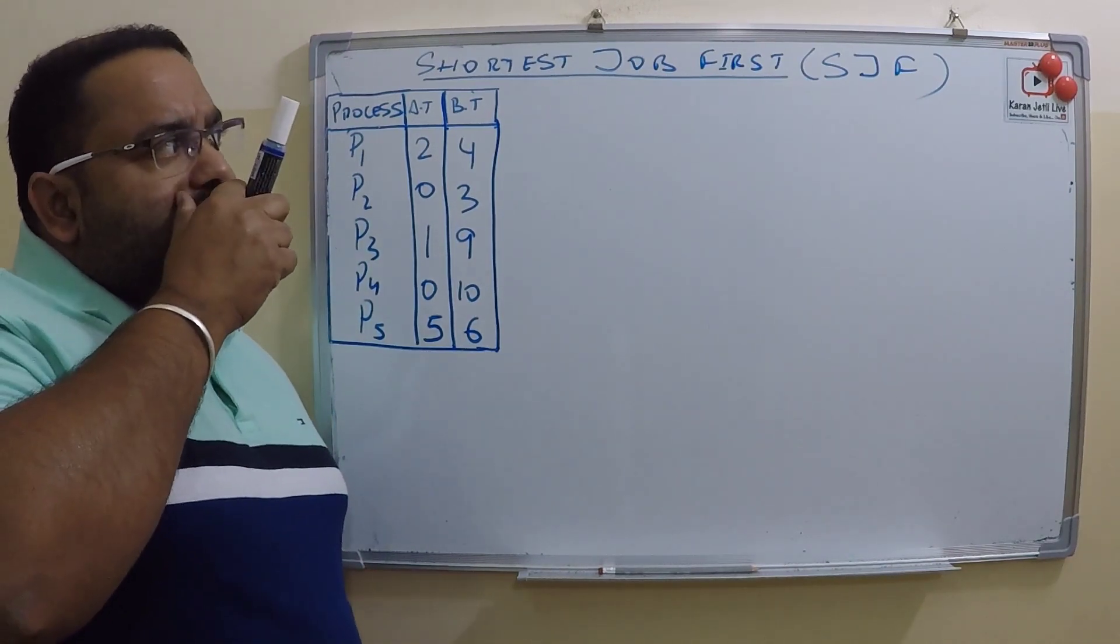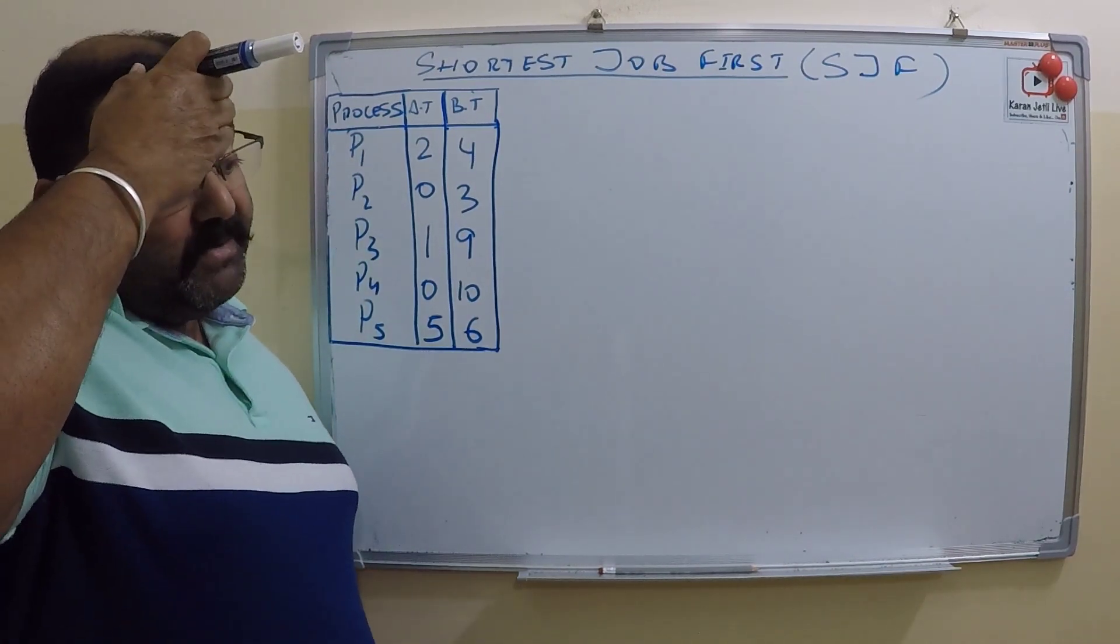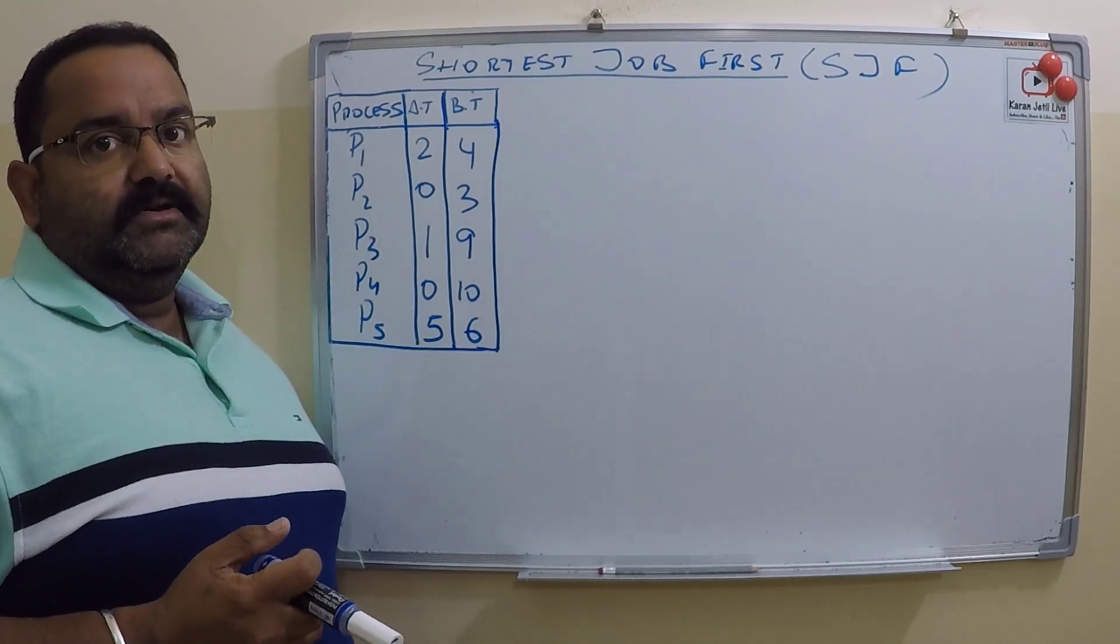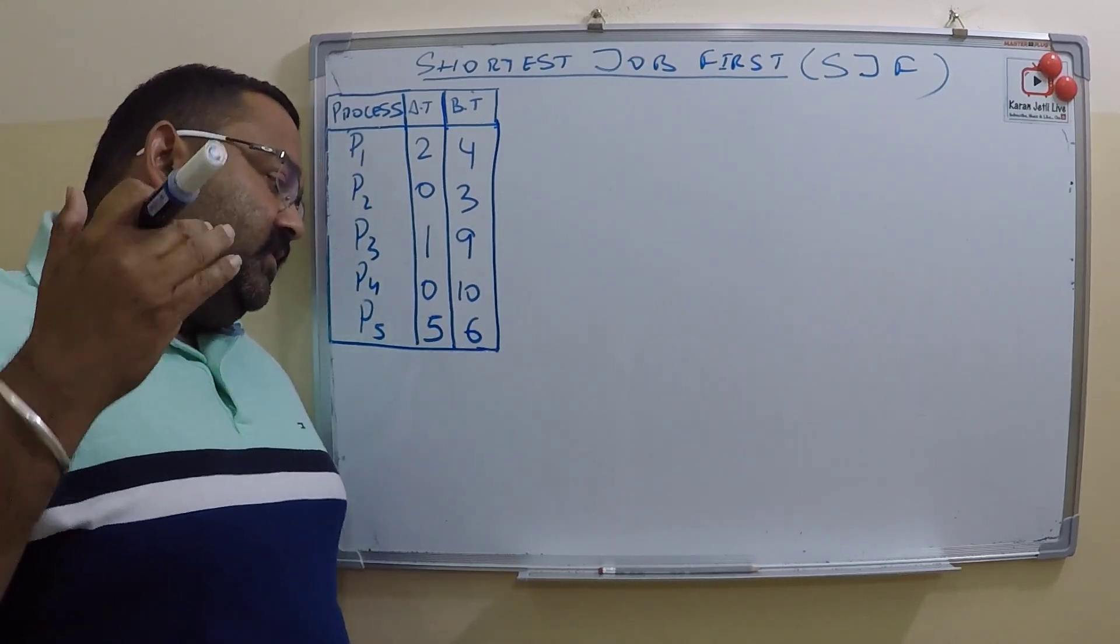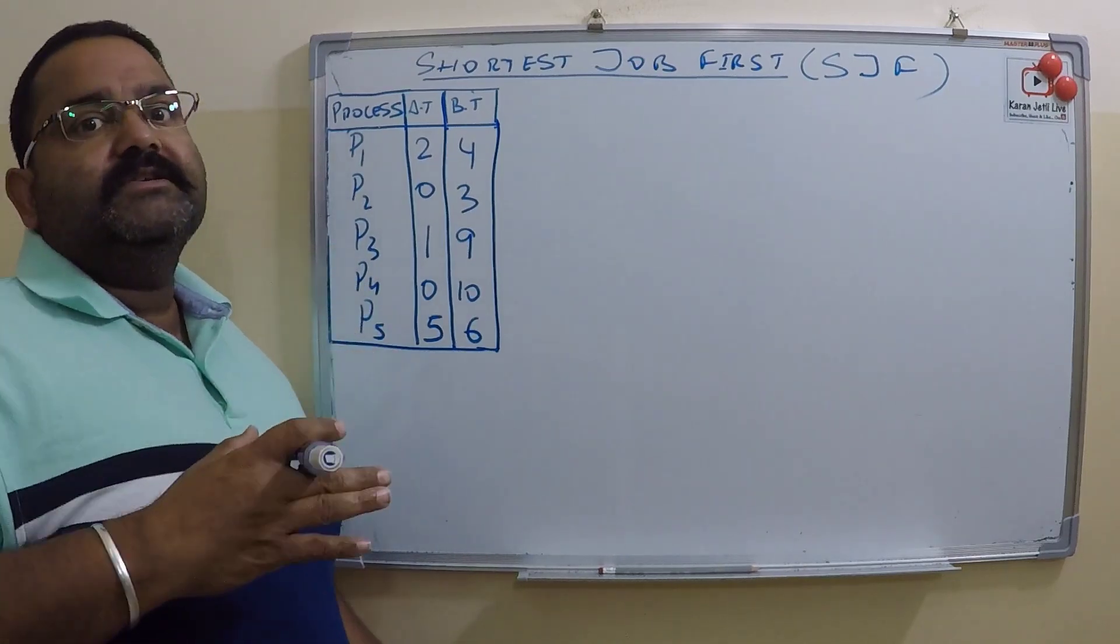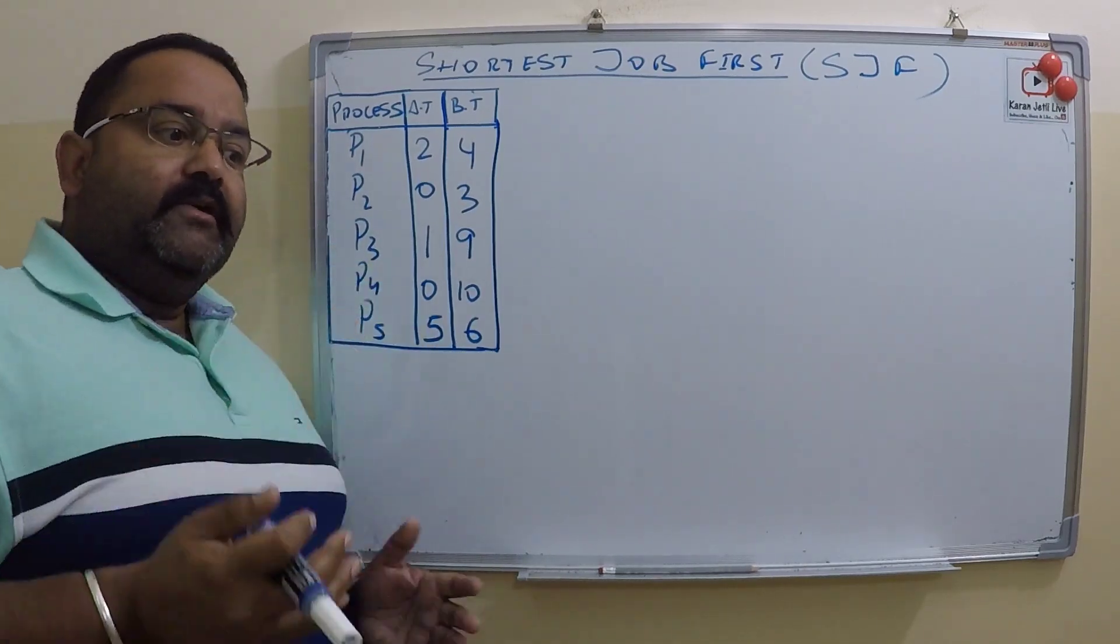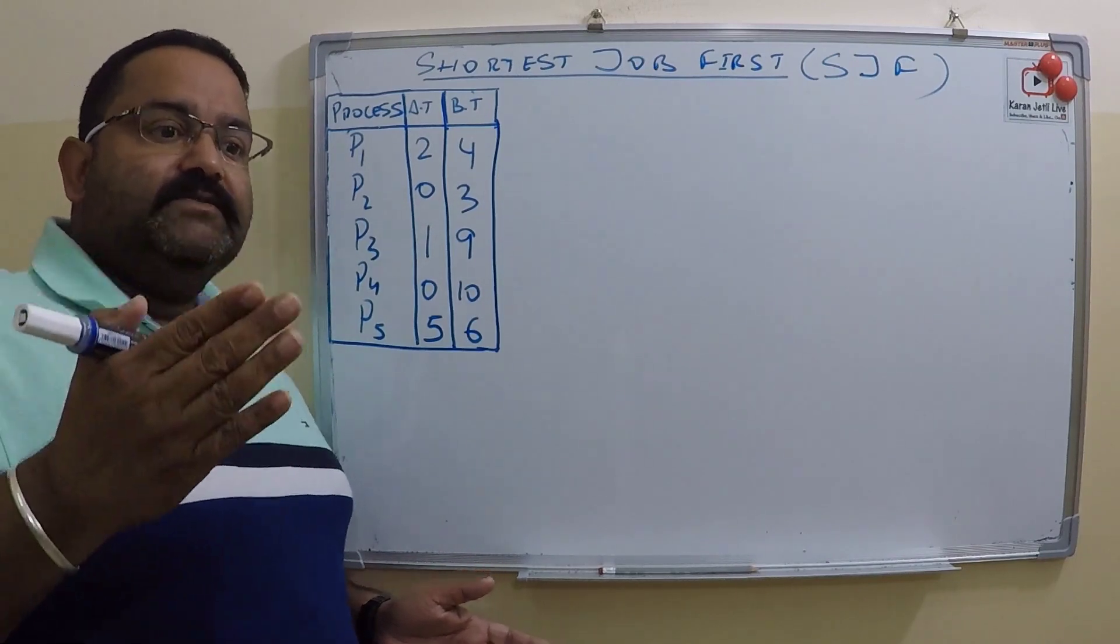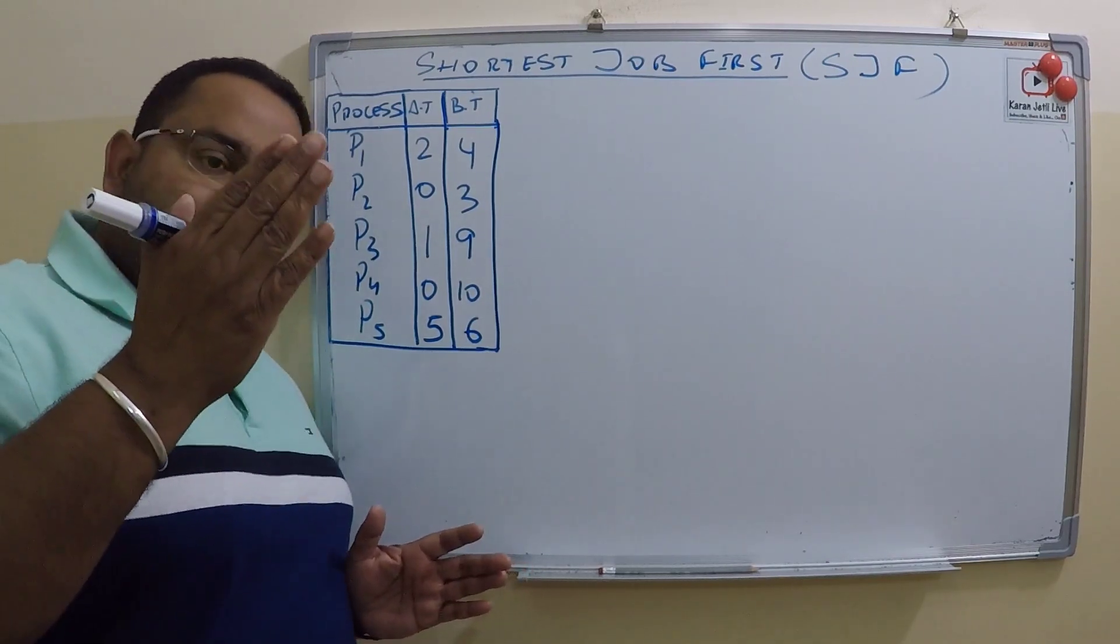Shortest Job First we will study keeping preemption in mind, so we will assume this scheduling is preemptive scheduling. If some process is running and some other process arrives whose burst is smaller than the remaining burst of the present process, then there will be a context switch.